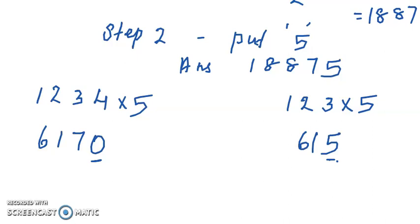We can check the answer. 1234 into 5, that is 6170, that is correct. The next one, 123 into 5, that is 615. That answer is correct. So the same way you can practice with different numbers.